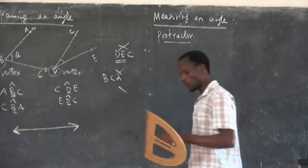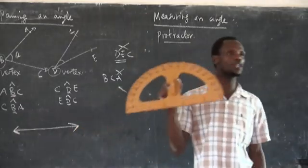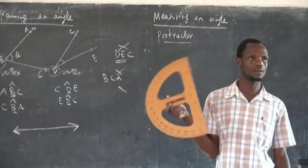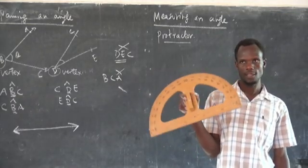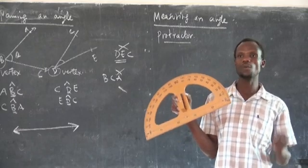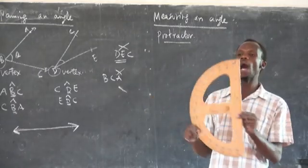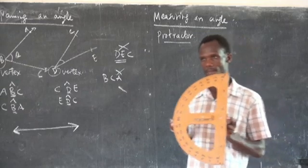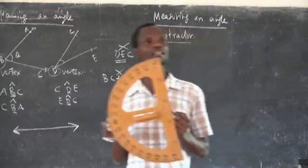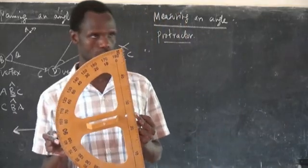When measuring an angle, you should have something called a protractor. This is a protractor, and we also have the smaller one. By using this protractor, you may measure an angle.